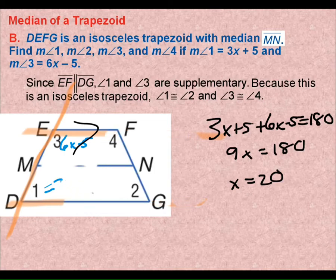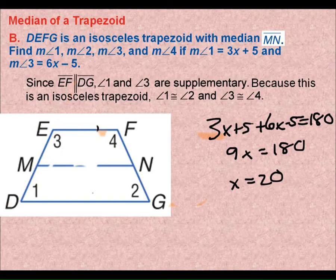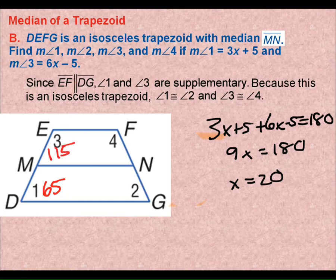The question, though, is I want all of the angles. I want angle 1, 2, 3, and 4. Now that I have 20, I can plug that back in. So angle 1, if I plug in 20 here, 3 times 20 is 60. Plus 5 is 65. If I plug in 20 here, 120 minus 5, 115. Which, those add to 180, so I know that looks good.